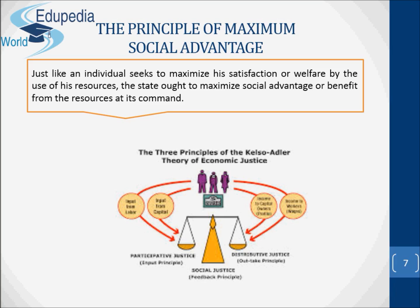Taxation, on the other hand, imposes a burden on the people. When the volume of taxation becomes high, every further increase in taxation increases the burden more and more — people undergo greater sacrifice for every additional unit of taxation. The best policy of the government is to balance both sides of fiscal operations by comparing the burden of tax and the benefits of public expenditure. The state should balance the social burden of taxation and social benefits of public expenditure in order to achieve maximum social advantage.